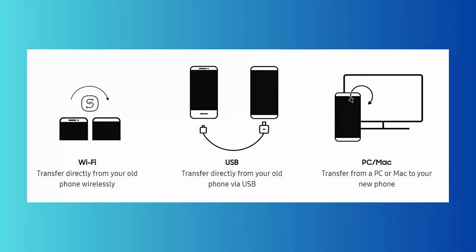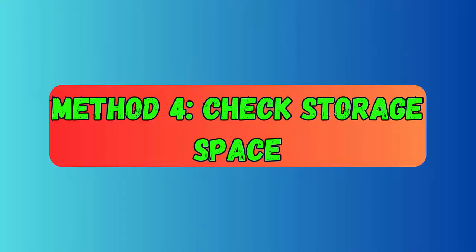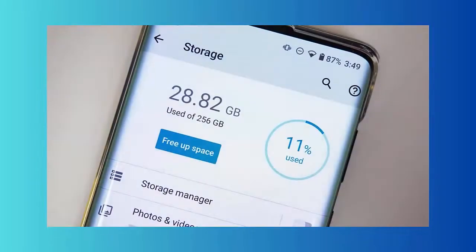Method four: Check storage space. First, go to Settings on your Samsung phone, then scroll down and look for Device Maintenance or Device Care. Tap on the Storage option, and finally check the storage space left on your device from here.